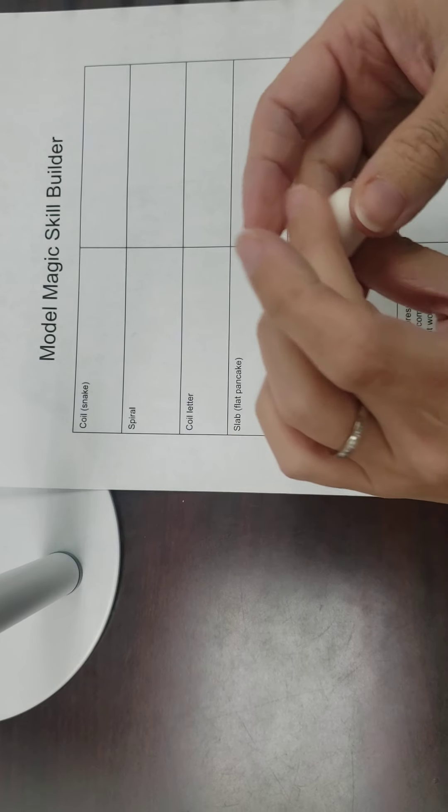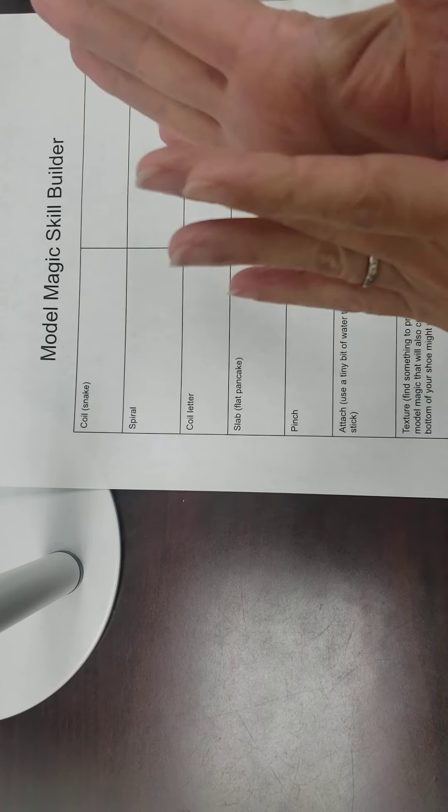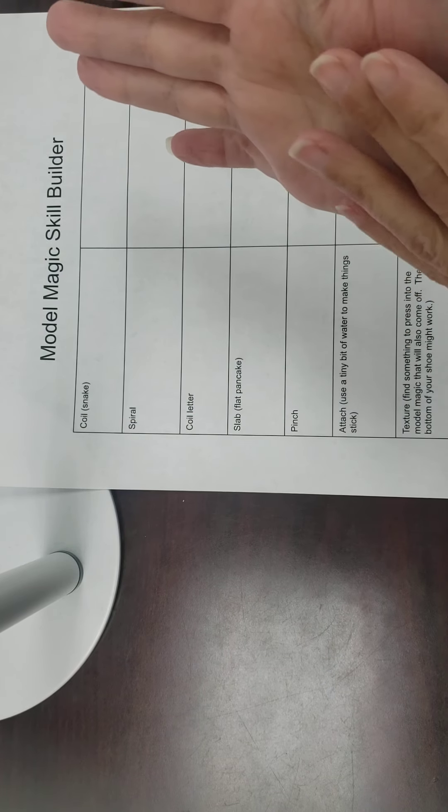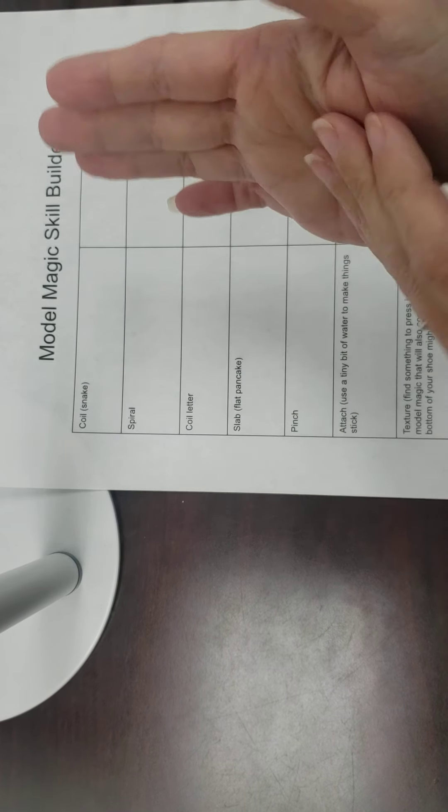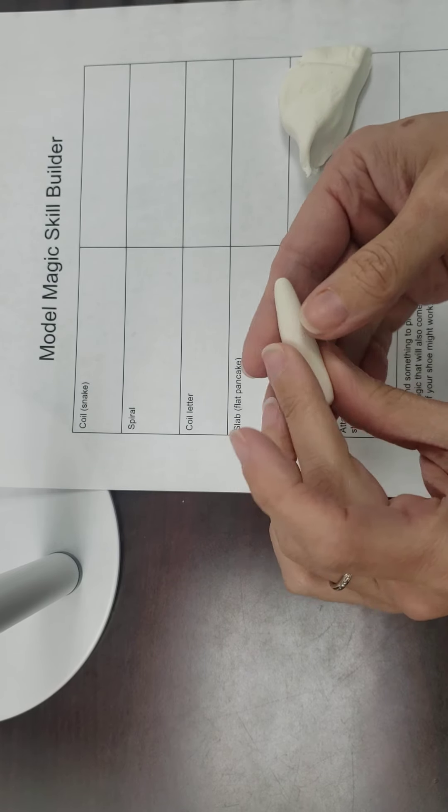Now model magic is sort of like a cross between, I would say, play-doh and real clay, where it feels like play-doh but it works more like real clay in that it will dry and it will dry actually nice and light and fluffy.